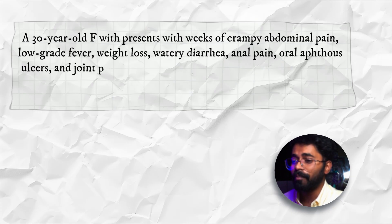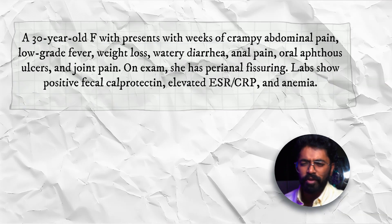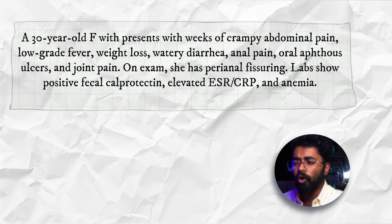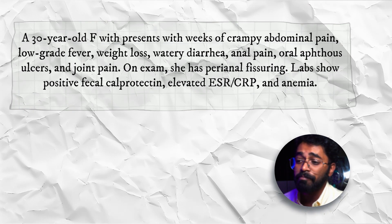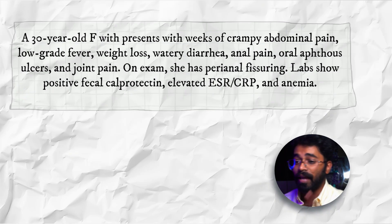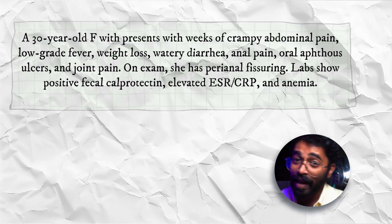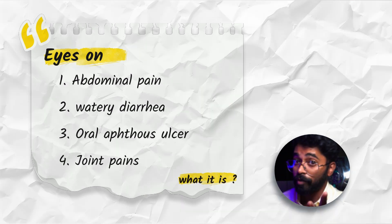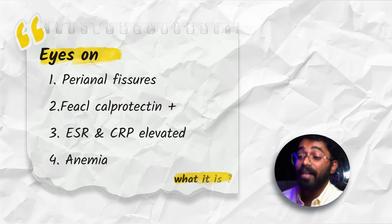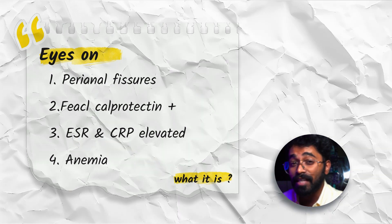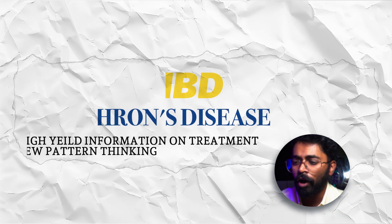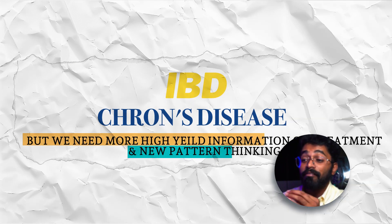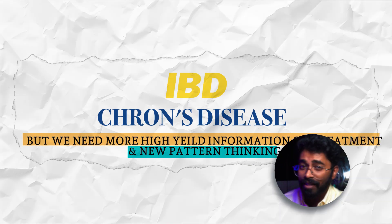Episode 2 of Power Revision for NEET PG. The question: a 30-year-old female presents with weeks of crampy abdominal pain, low-grade fever, weight loss, watery diarrhea, anal pain, oral ulcers, and joint pain. On examination, she has perianal fissuring. Labs show positive fecal calprotectin, elevated ESR, CRP, and anemia. The key points to focus on: abdominal pain, watery diarrhea, oral ulcers, joint pains, perianal fissures, and raised inflammatory markers.